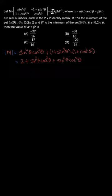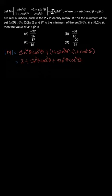For now, we will keep this determinant expression as it is. Remember that M inverse is nothing but adjoint of M divided by determinant of M. We have computed the determinant, so let's now write the full matrix equation.